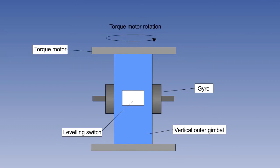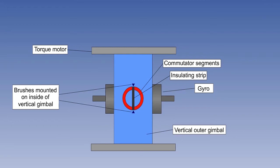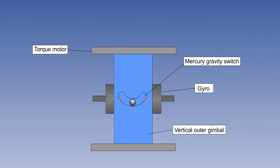To tie the gyro to the yaw axis, the inner and outer gimbals are maintained at 90 degrees to each other by a system of commutators, insulating strips, and brushes. If the gyro topples, the brushes are no longer in contact with the insulating strip, so a current passes through the commutators. Alternatively, to tie the gyro to the vertical, mercury gravity switches are used.